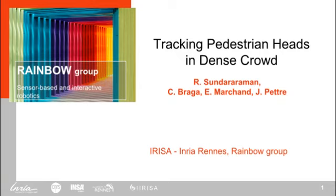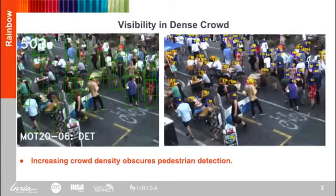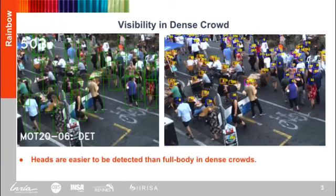In this work, we present an alternative approach for tracking in dense crowds, tracking pedestrians by their most visible parts in a video: heads. Increasing crowd density challenges visibility of humans, limiting the scalability of existing pedestrian trackers to higher crowd densities, as occlusion deteriorates the performance of object detectors. To tackle these challenges and track humans efficiently in densely crowded environments, we rekindle the task of multi-object tracking by tracking humans by their distinctly visible part: heads.